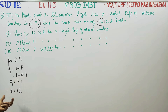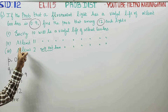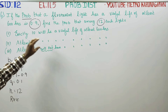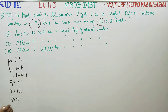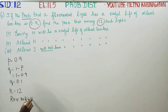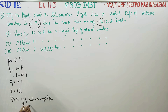X follows binomial distribution. The random variable X represents the number of bulbs with a useful life of at least 600 hours.